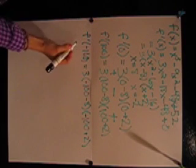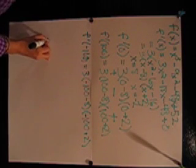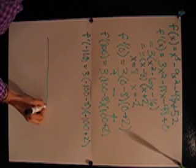So negative 2 is a local max because it goes from increasing to decreasing.